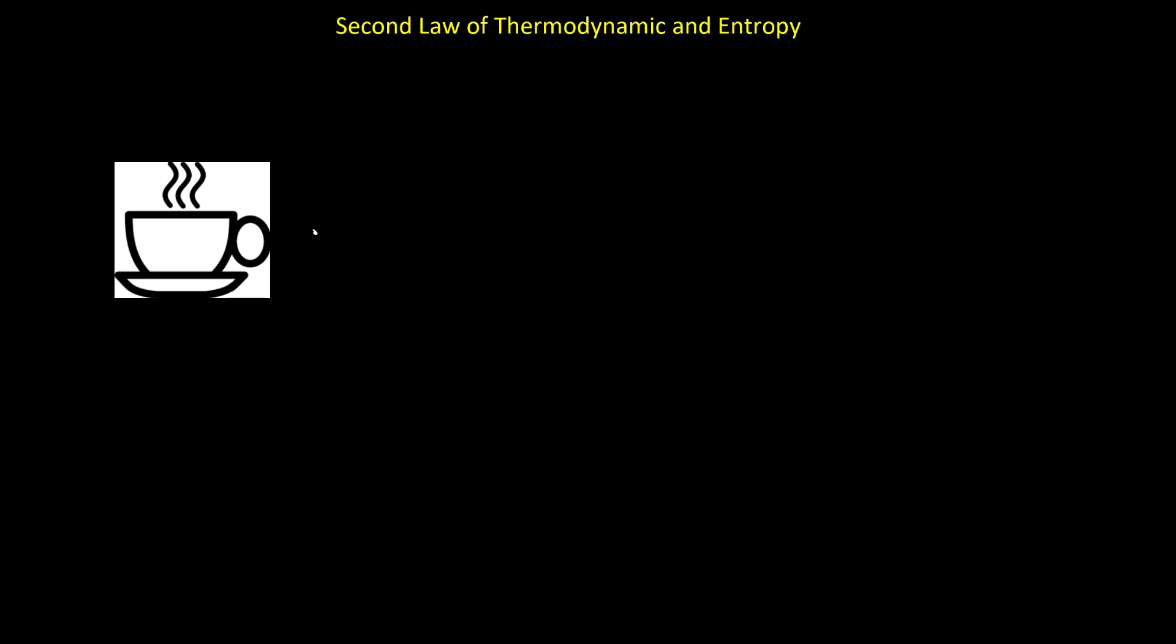In this video we are going to talk about the second law of thermodynamics and also entropy. First, I'm going to talk about entropy. Entropy is dispersion of energy. For example, a hot coffee after a while transfers energy to the environment, so the energy is dispersed to the environment and causes the increasing of the random movement of particles in the air.